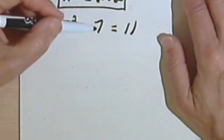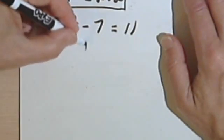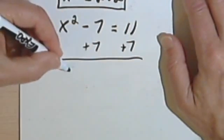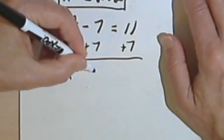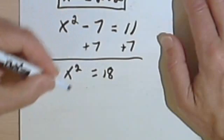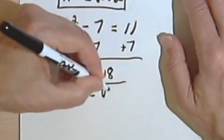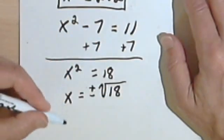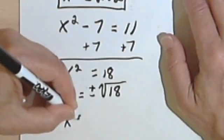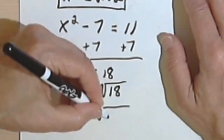x squared minus 7 equals 11. I want to isolate my variable, so I'll add 7 to both sides. On the left side I just get x squared. On the right side I've got 11 plus 7 is 18. So x is going to equal the positive and negative square roots of 18.